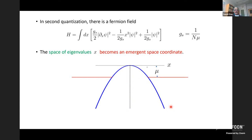In the double scaling limit only a quadratic term in the potential survives, giving a Hamiltonian which is a many-body Hamiltonian of N fermions in an inverted harmonic oscillator potential. Any N-body quantum mechanics can be written as a non-relativistic field theory by second quantization. It's useful to rewrite the theory in terms of a second-quantized fermion field ψ. The parameter g_s is the inverse of a scaled Fermi level, measured from the top of the potential times N. The double scaling limit corresponds to N → ∞, μ → 0, with N·μ held fixed, so the space of eigenvalues becomes the emergent space coordinate.